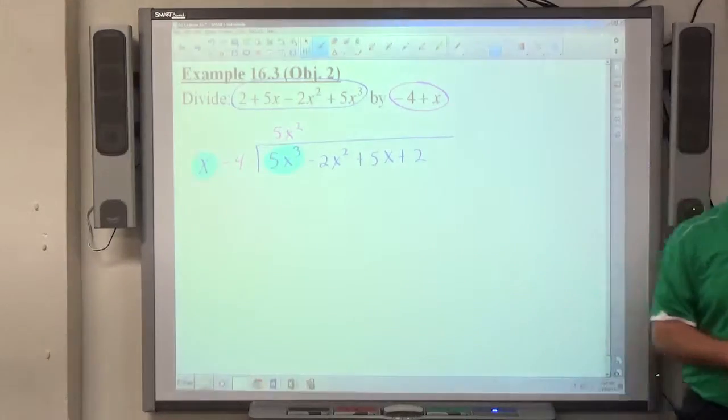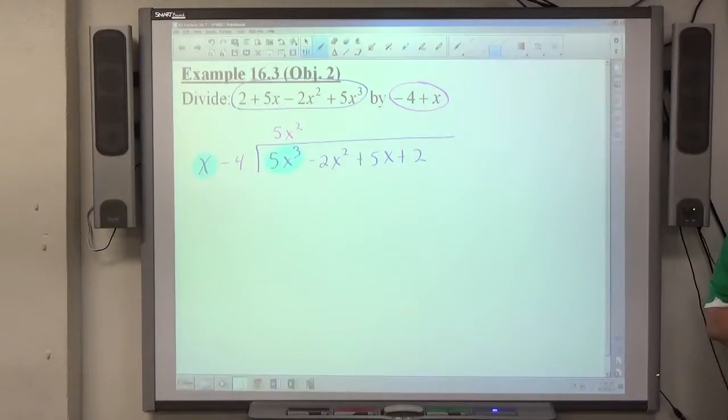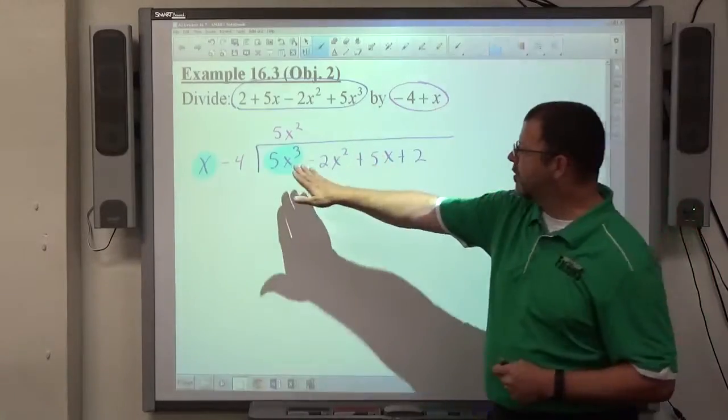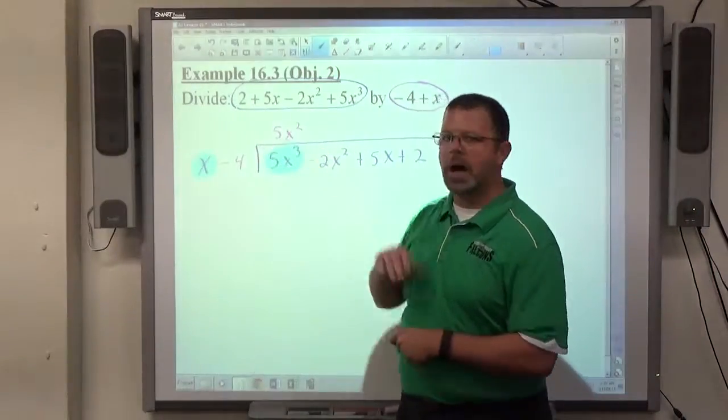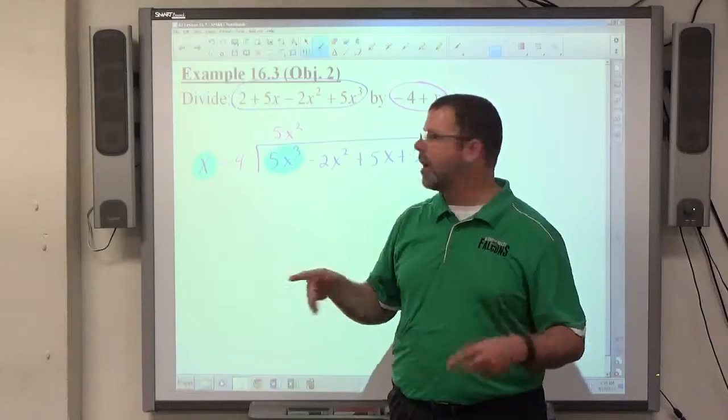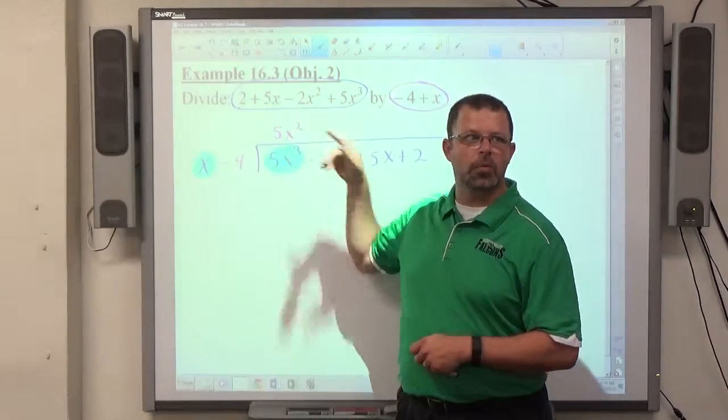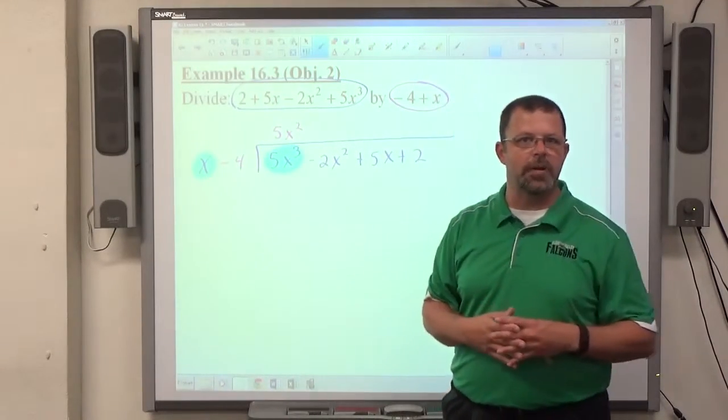So positive 5x cubed with one less power is positive 5x squared. It's very important that you get the correct signs up on that bar. So this is a positive being divided by a positive, so we get a positive. All we're doing is dividing by x, which is taking 1x off of x cubed, which makes x squared. 5 is not affected by that division.